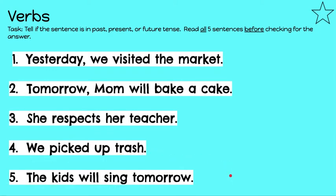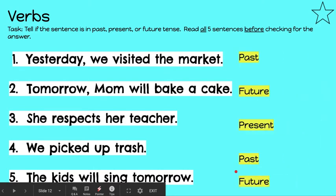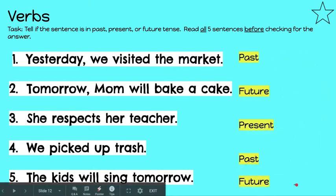Number five: The kids will sing tomorrow. The past would have an -ed. The present would be left alone with no change. And the future would have the word will in front of it. The kids will sing tomorrow — it has will, so it's the future. So we got those all right.